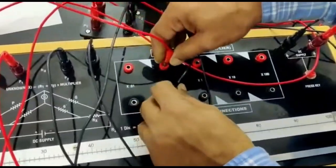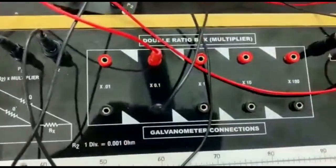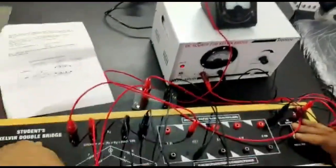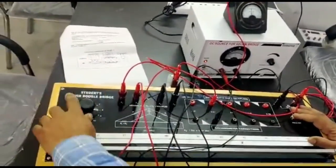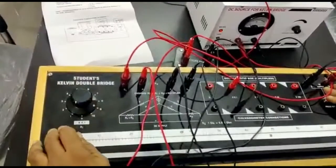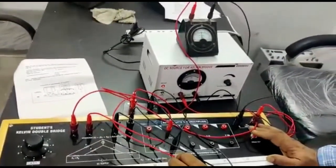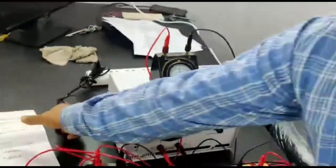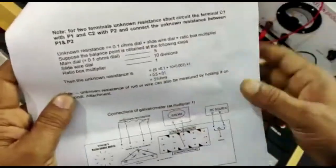Now repeat the experiment at a different value of multiplier, say at 0.1. Readjust the dial R1 to get minimum deflection. Here is the minimum deflection. Put these values into the given formula to calculate the unknown resistance.